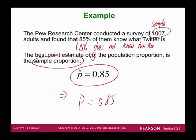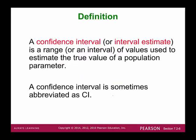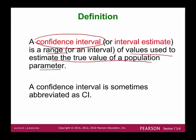Meaning if you generalize to the entire population, 85% of adults in the U.S. know Twitter. The confidence interval is another method. Besides the point estimate, the confidence interval is a range of values used to estimate the true value of the population parameter. Confidence interval is sometimes abbreviated CI.